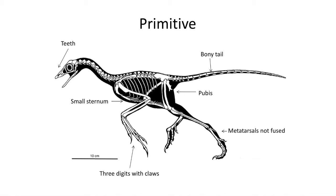The fifth primitive trait can be found in the pelvis, in which the pubis bone projects anteriorly. This clearly shows an affinity with saurischian dinosaurs, and while the pubis is not as anteriorly projecting as in some theropods, the primitive position of this bone in the skeleton clearly shows an affinity to its theropod ancestry.